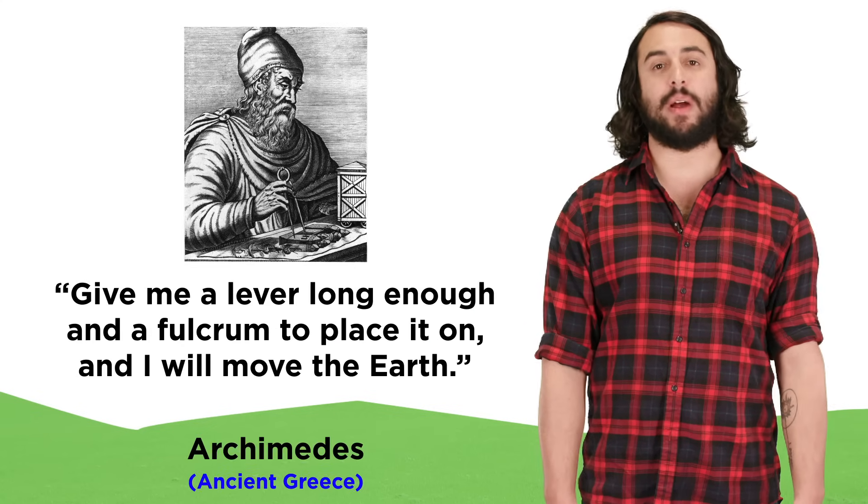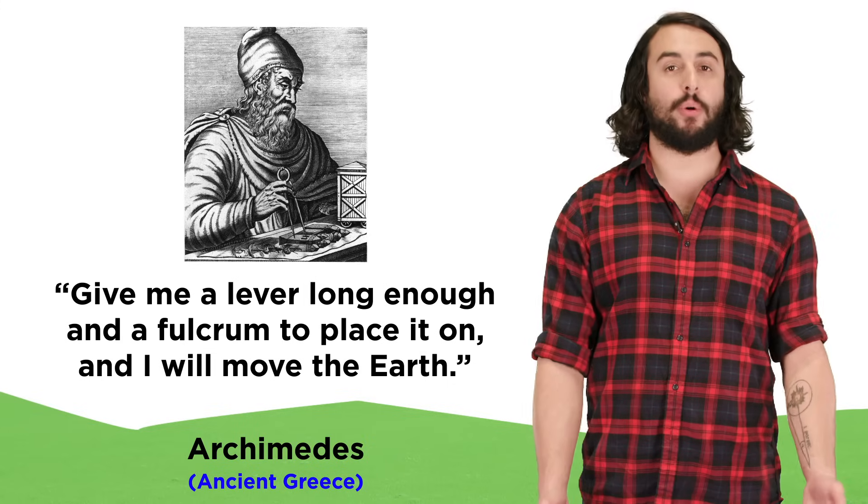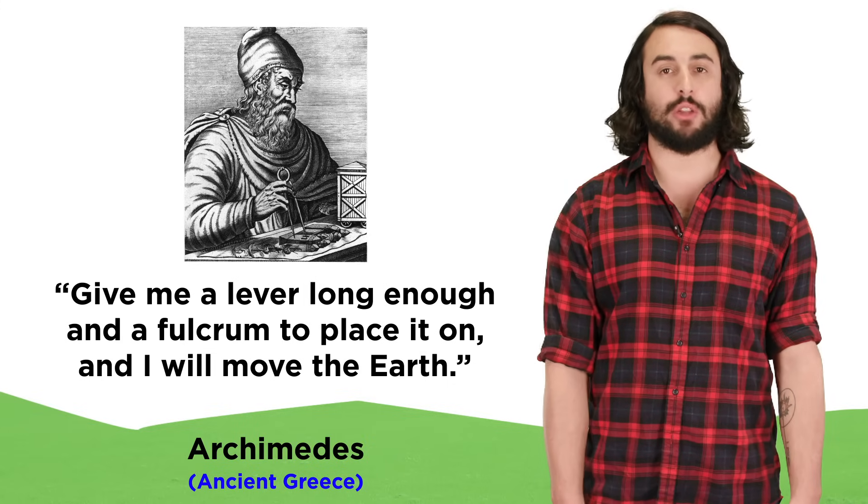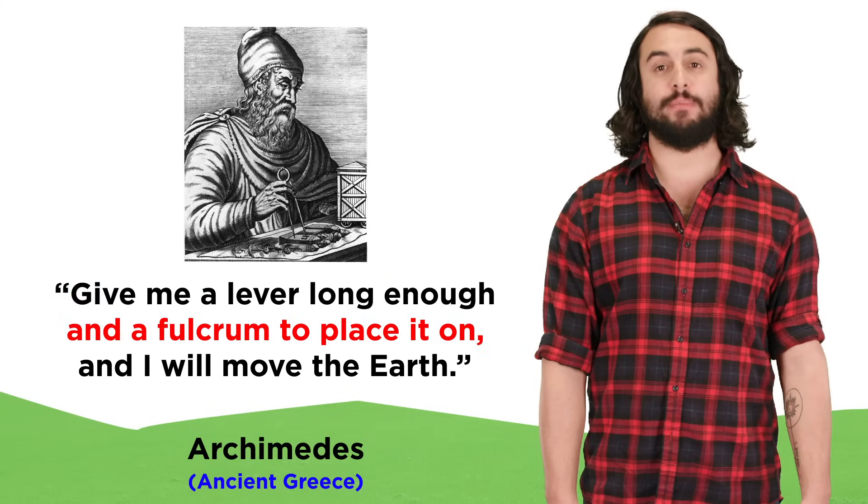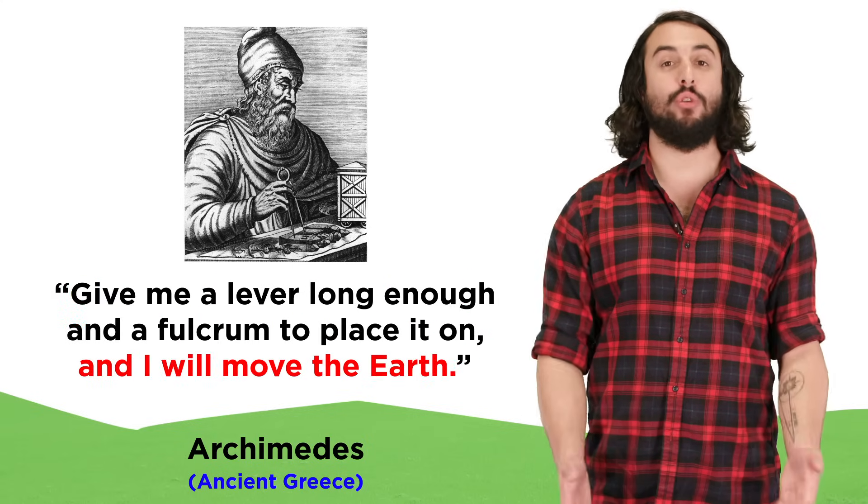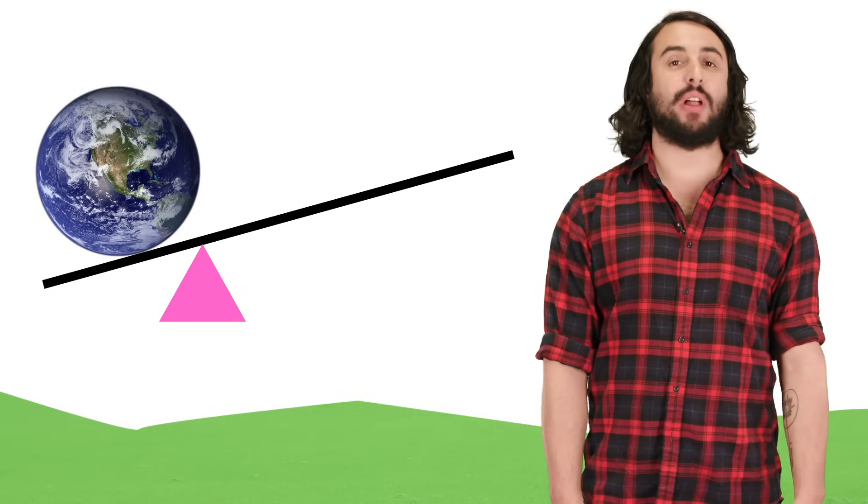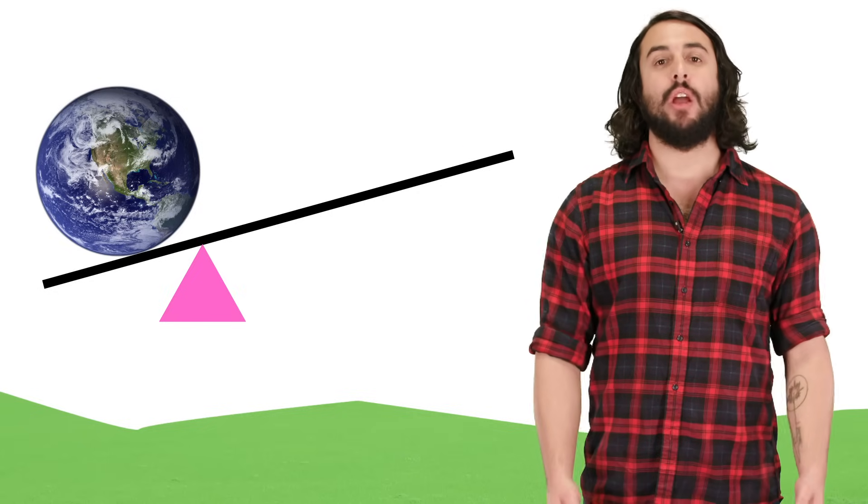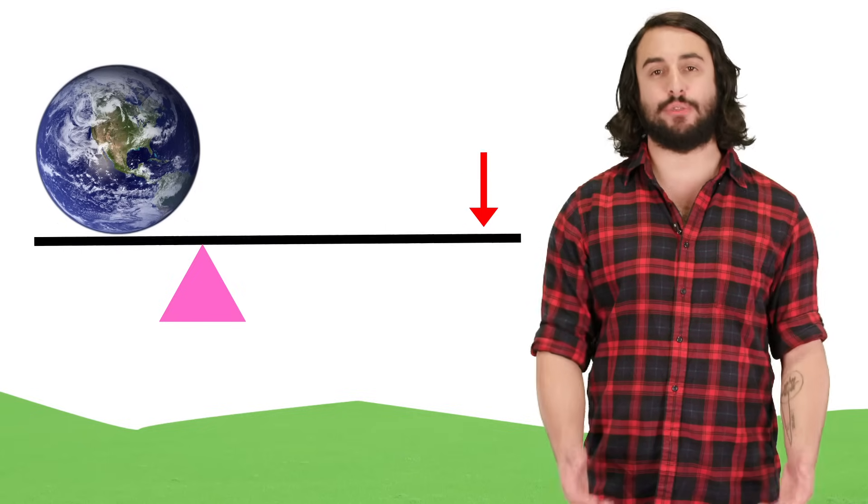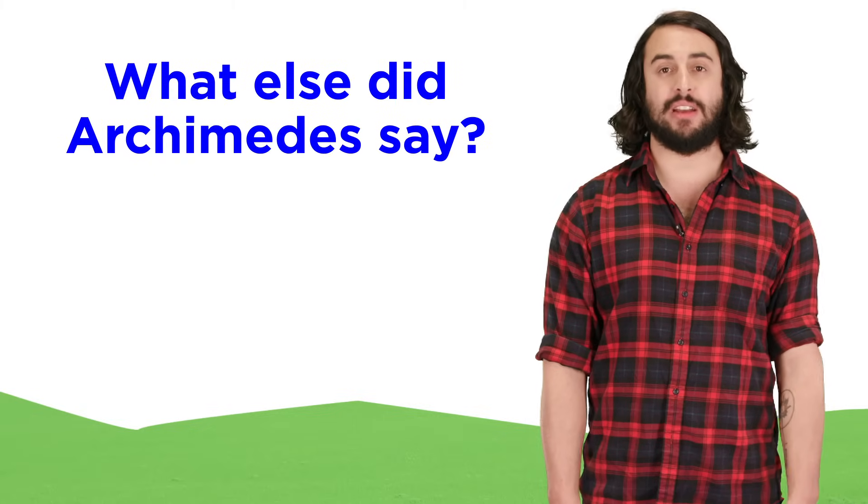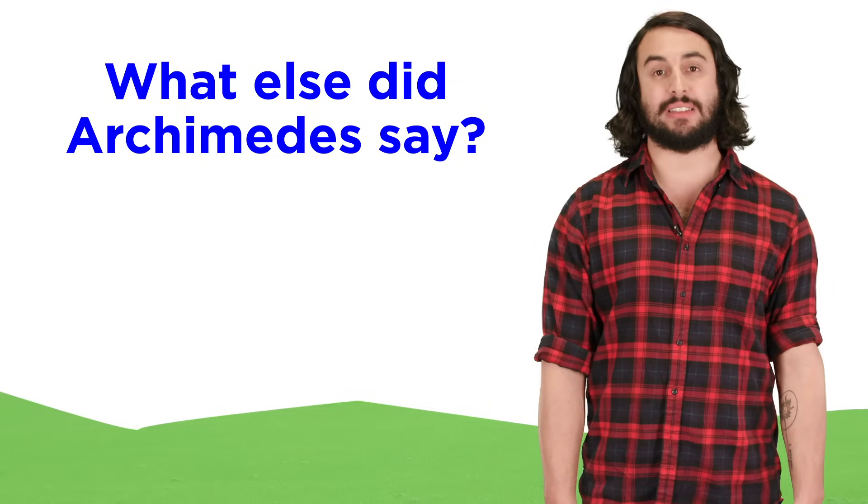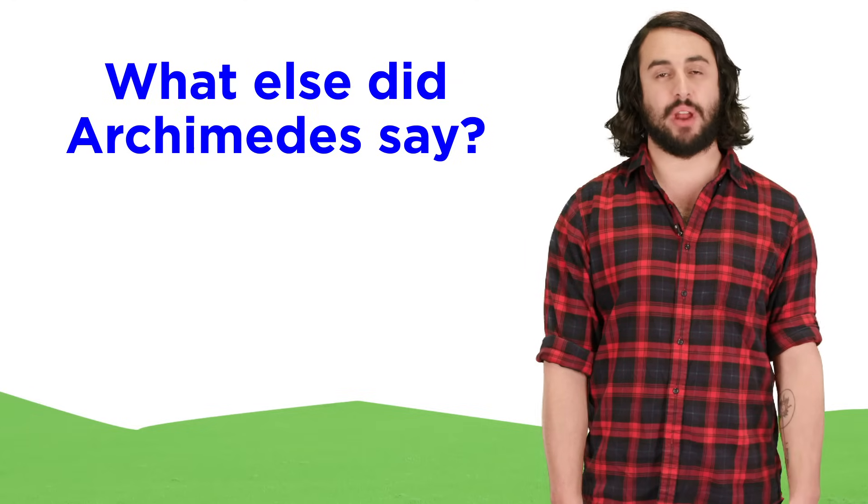This sheds light on the quote by Archimedes, which is generally reported as some variation of the following, give me a lever long enough and a fulcrum to place it on and I will move the earth. This implies that with a long enough lever arm one could generate such a massive torque so as to move the world. Wise words from a wise man, so let's learn about some other things Archimedes said next, but first let's check comprehension.